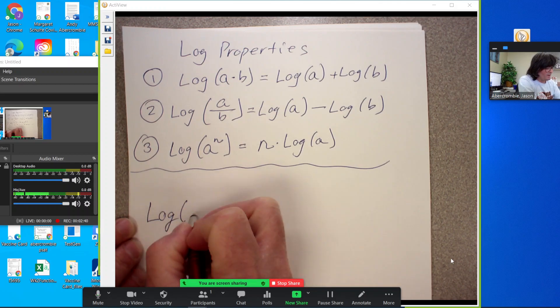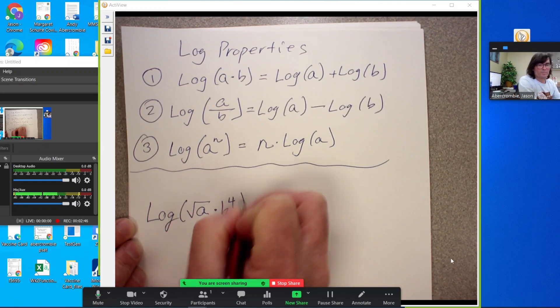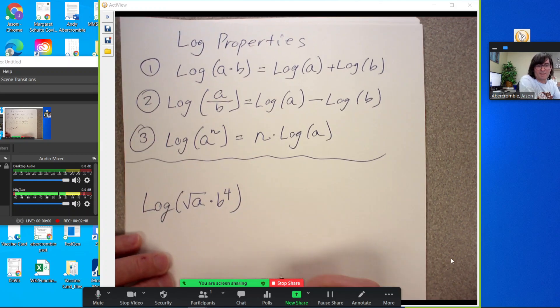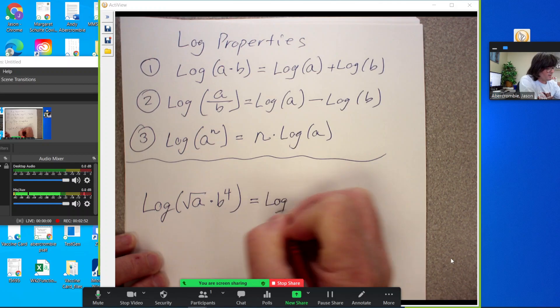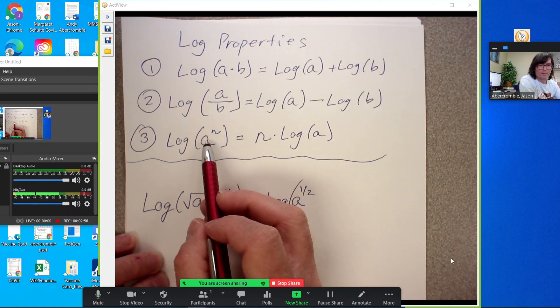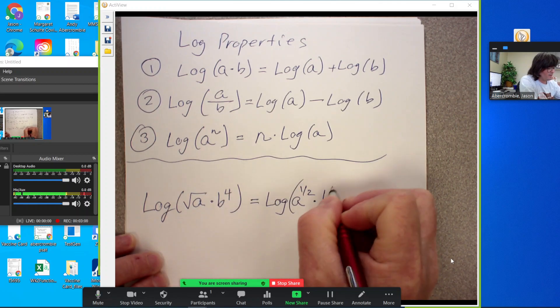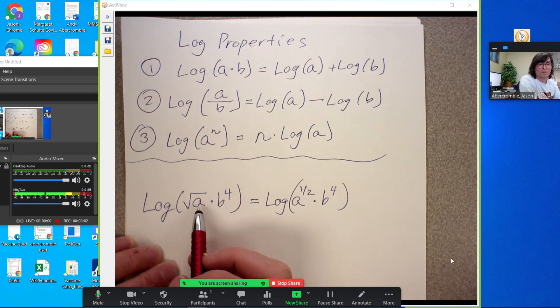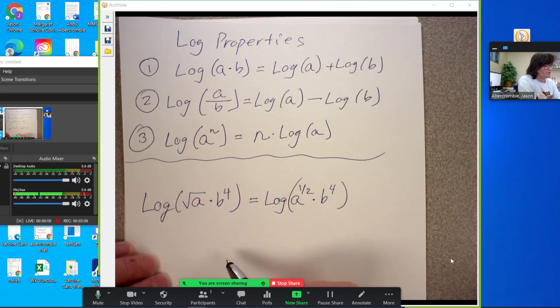So we'll start with log of the square root of a times b to the fourth. By the way, anytime you have a root, you should consider writing that as an exponent because we have a property about exponents. That's a to the one half b to the fourth. If you don't know how to convert roots to exponents, I have a video on exponent rules. Definitely should check that out.